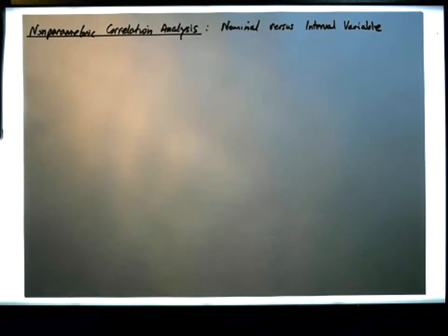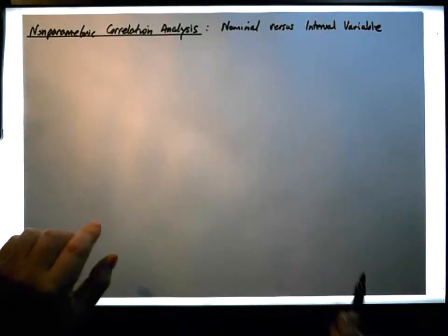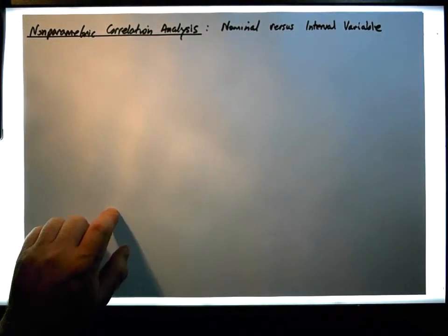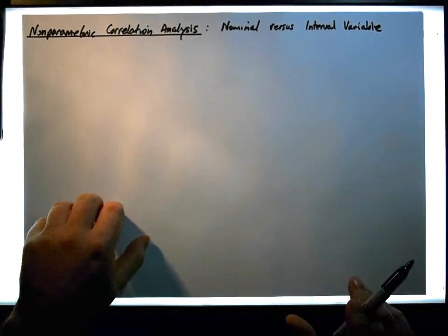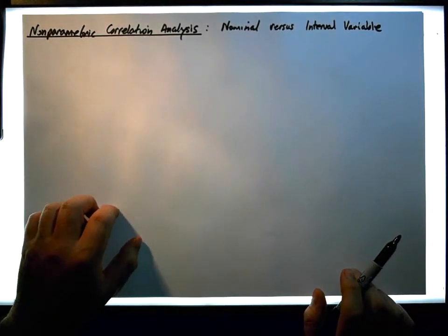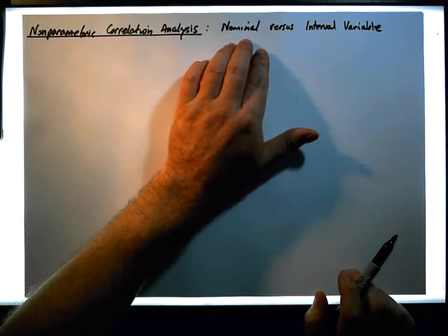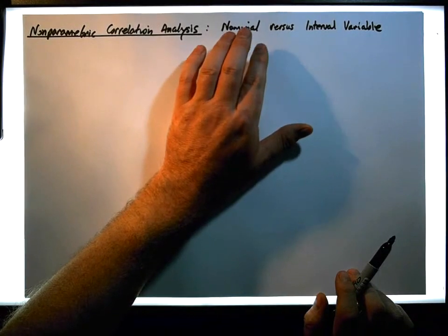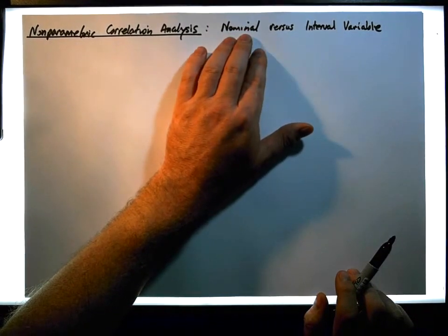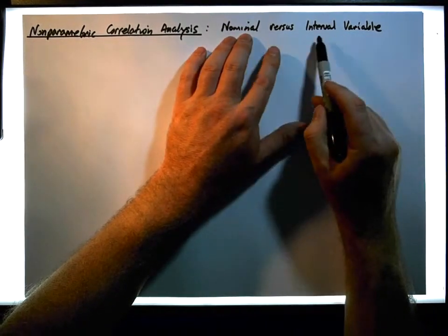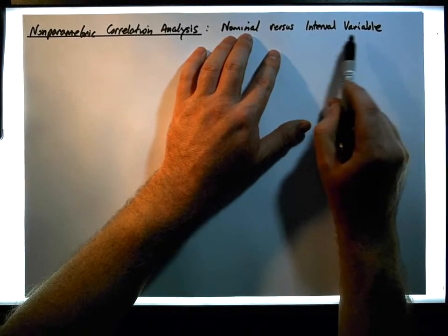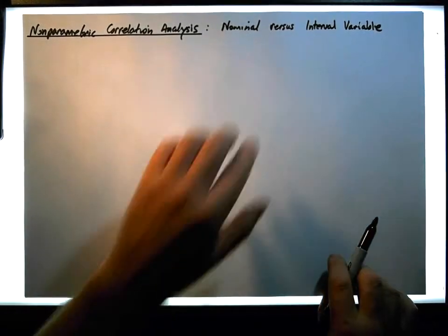Hi guys, this is Jonathan Lambert with Maths and Stats, and in this video — another video in our series dealing with non-parametric correlation analysis — we're going to concentrate on the calculation of the correlation between a nominal variable, that's a variable measured on a nominal scale of measurement, versus a variable measured on an interval or a ratio scale of measurement.